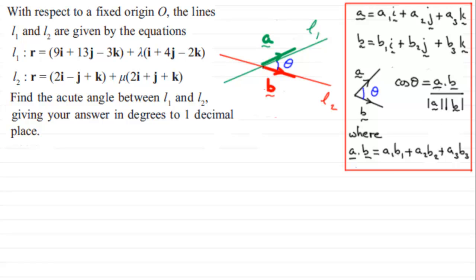So we start then by saying let A be one of those direction vectors. Let's say we take it as this one here and I'm going to write it as a column vector. So it's going to be one, four, minus two.